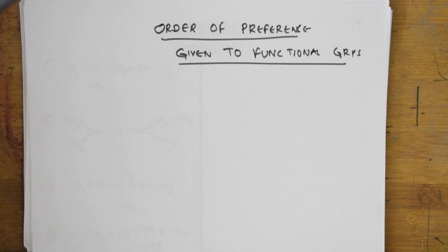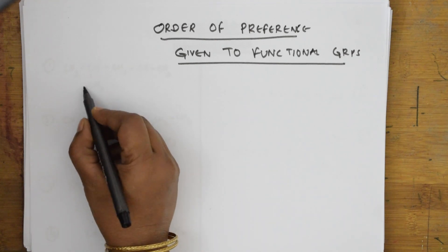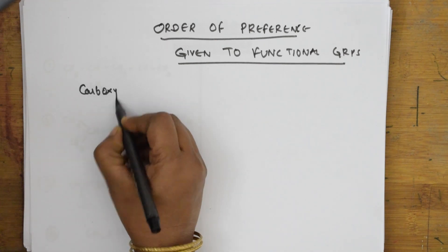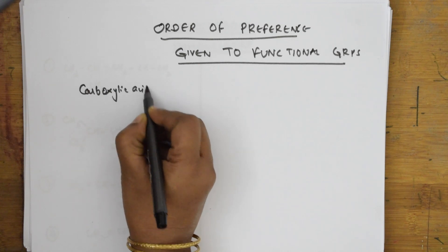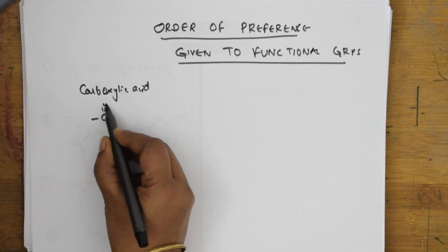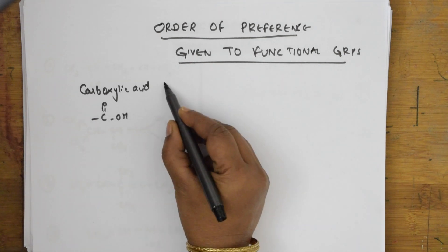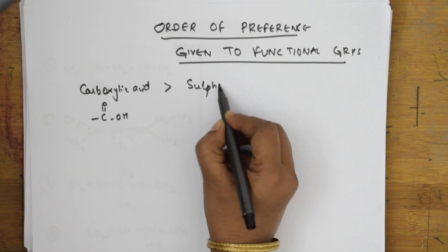Remember: when you have four or five functional groups present in a particular example, the first order is given to carboxylic acid. The formula of carboxylic acid is COOH. That is the functional group. After carboxylic acid, the next order is given to sulfonic acid.